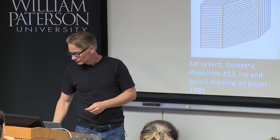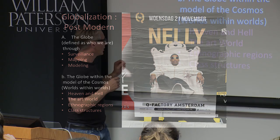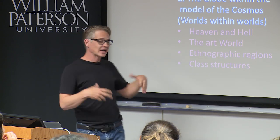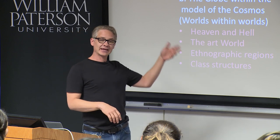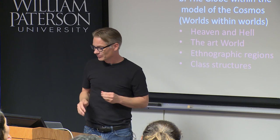In postmodern globalization, the globe is defined by surveillance, mapping, modeling, the cosmos, heaven and hell, the art world, ethnographic regions, and class structures. I've included an image of Nelly — I got off a train in Amsterdam and this poster was there. He fits this conversation because he exists in the micro world of the art world and entertainment. The idea of class structure is evident in rap generally; showing wealth or taste is a class structure. The sunglasses for me represented surveillance and trying to avoid being recognized.